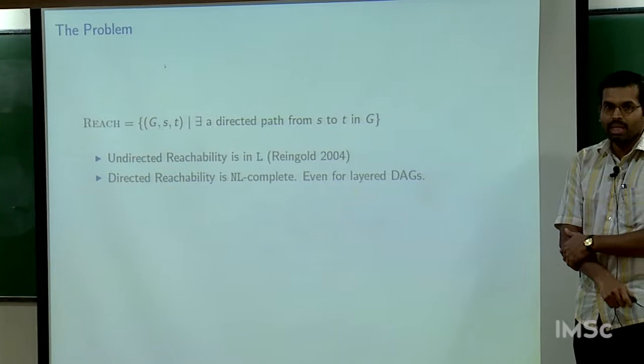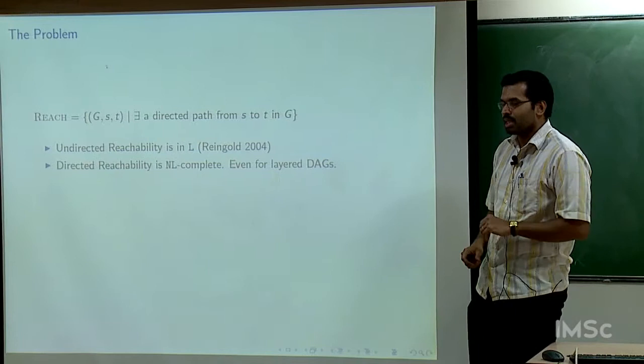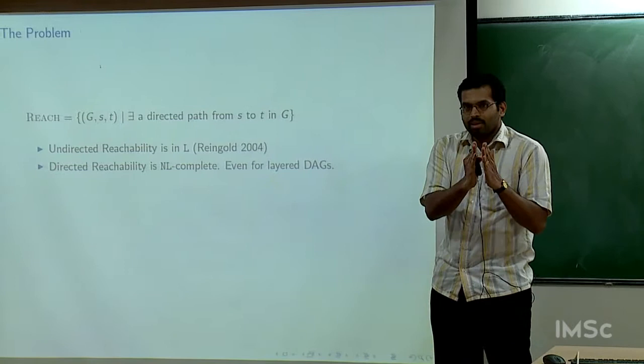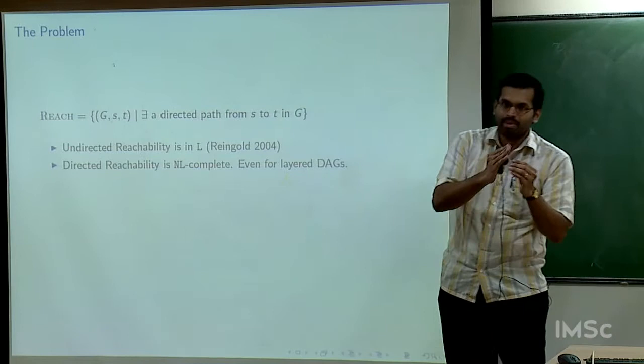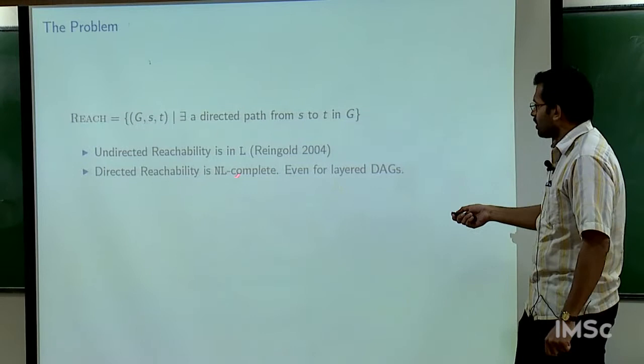For this talk, I will focus on layered DAGs. By layering, I mean vertices can be classified with a layer number such that edges go from one layer to the adjacent next layer. One would ideally want to put this in log space, which would settle the NL versus L problem.